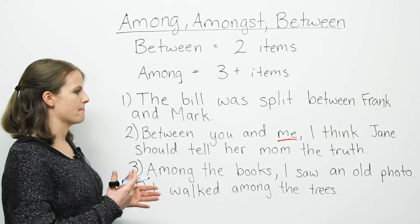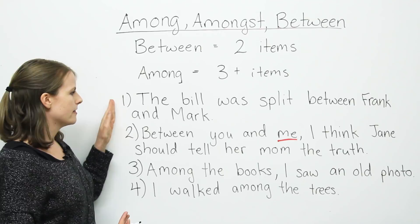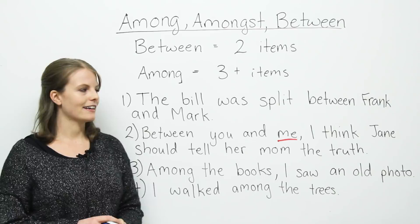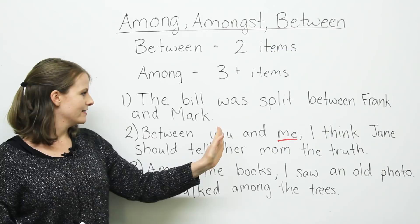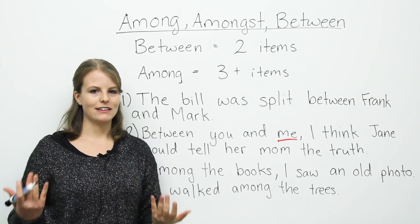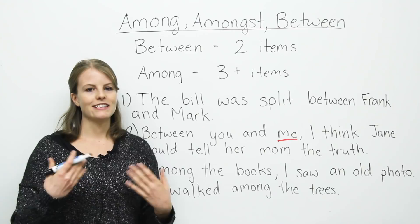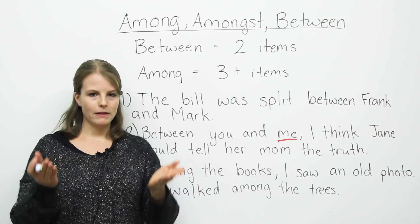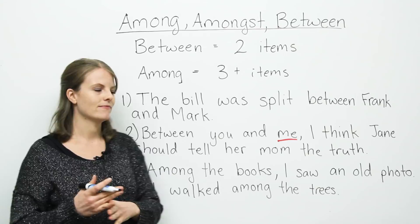Let's look at the first example sentence: 'The bill was split between Frank and Mark.' We have two people, so this is correct — between Frank and Mark. 'The bill was split' means when you go to a restaurant, at the end of dinner they give you a piece of paper that might say $40. What Frank and Mark did is they split the bill between them, meaning Frank paid some and Mark paid some.